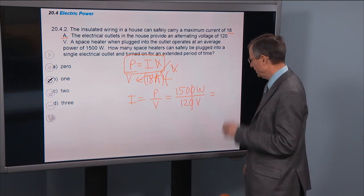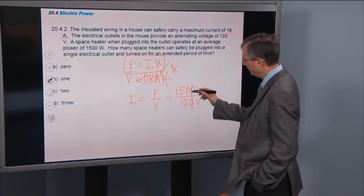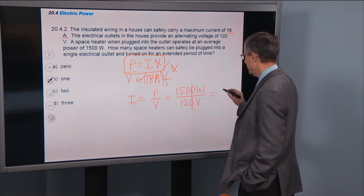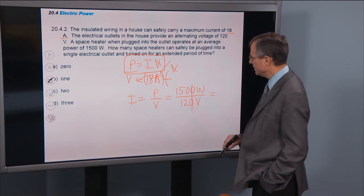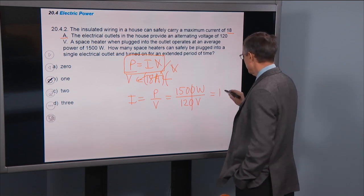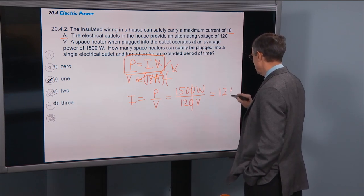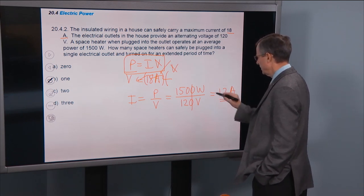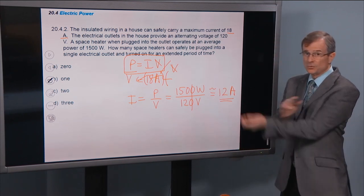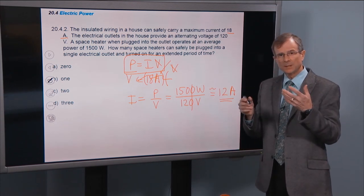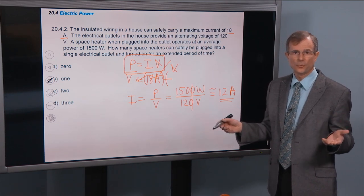So we're talking about around 150 divided by 12, 12 times 12 is 144. So it's right around 12 amps, approximately. So about 12 amps is what a single space heater, how much current it's going to draw.